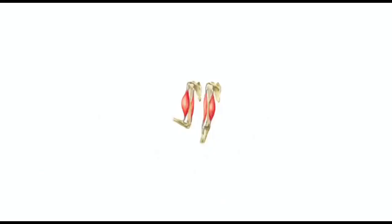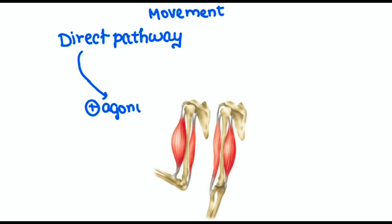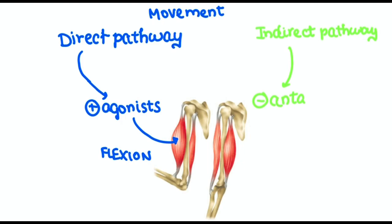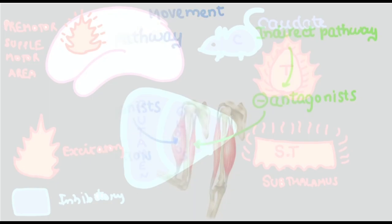For any movement to happen, there is a direct pathway which stimulates the agonist muscle, and an indirect pathway which inhibits the antagonist muscle so that the movement can be done effectively. Let's see the direct